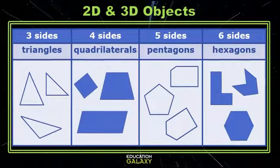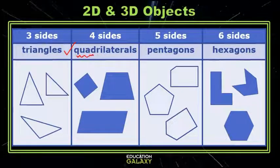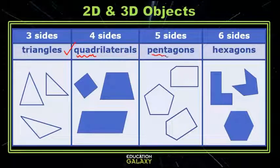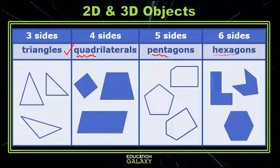Polygons with three sides are called triangles, polygons with four sides are called quadrilaterals, polygons with five sides are called pentagons, and polygons with six sides are called hexagons.